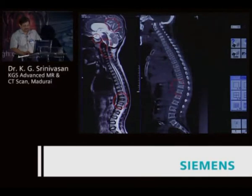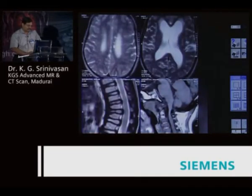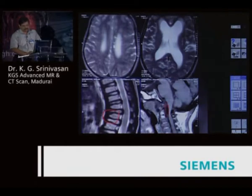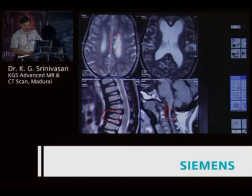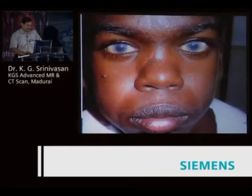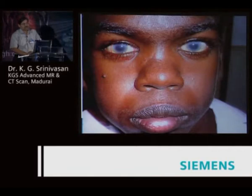This is classical mucopolysaccharidosis — there are several types. This is the Hurler type, where you can see the J-shaped appearance. Because of alpha-L-iduronidase deficiency, mucopolysaccharides are deposited over the membrane, producing significant thickening and compressive myelopathy. The dilated VR spaces are filled with mucopolysaccharides — very classical of Hurler type.